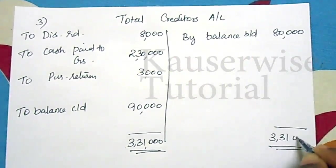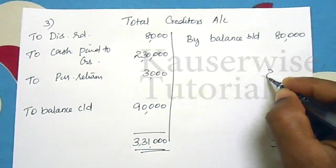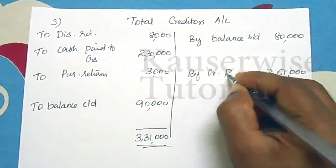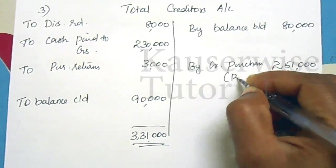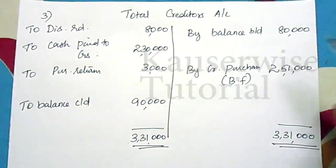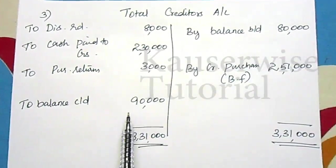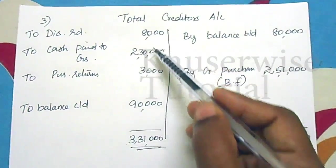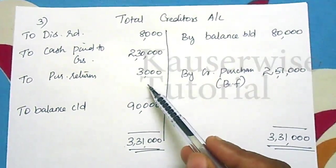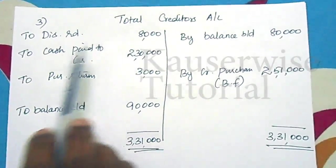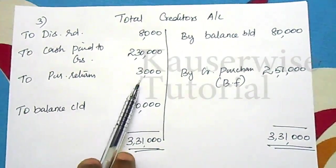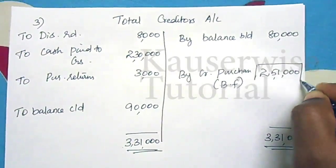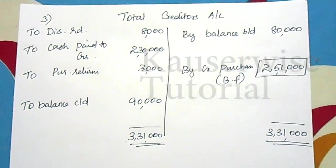Enter the total of ₹3,31,000 on the credit side as well. The balancing figure is credit purchases of ₹2,50,000. So with the opening balance, closing balance, discount received, cash paid, and purchase returns all entered, the balancing figure gives us credit purchases of ₹2,50,000.